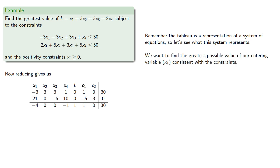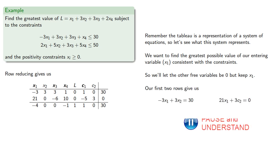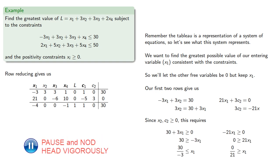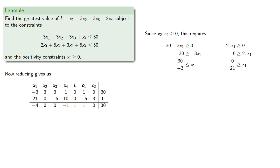Remember, at this point, we want to find the greatest possible value of our entering variable that's consistent with the constraints. So we'll let the other three variables be zero, but keep x1. Our first two rows give us the equations, and so our other variables will be... Now, since x2 and c2 must be greater than or equal to zero, this is going to require... And this is where our quotients come from. Now, since x1 is non-negative, our first bound is always satisfied.